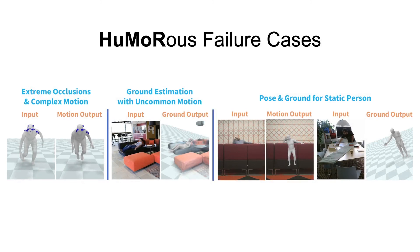Though promising, our method does fail in some cases. For example, extreme occlusions that leave a small subset of the body visible are particularly challenging. Further, since our method heavily relies on motion to determine plausibility, uncommon motions or static people can cause erroneous pose and ground estimations.